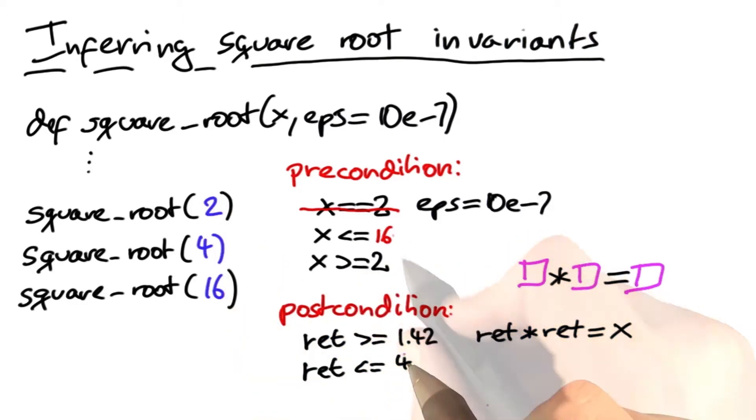But we all know that the real precondition for square root does not have specific range constraints on x, except that x should be greater or equal than 0. Likewise, the return value of square root is not necessarily between the square root of 2 and the square root of 16, but it can actually be anything that's again greater than 0.